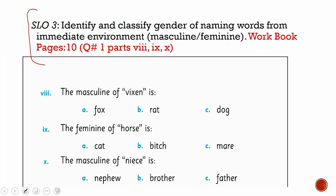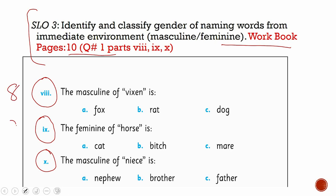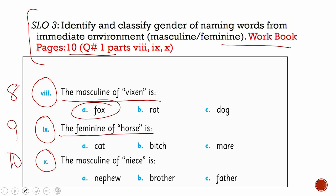Please move on to your workbook page number 10 and circle parts 8, 9, and 10. The masculine of vixen is fox. The feminine of the word horse is mare. The masculine of niece is nephew.